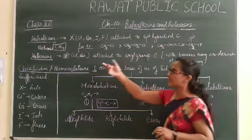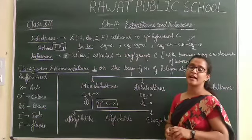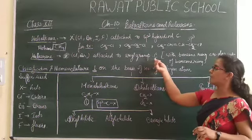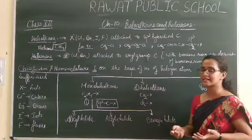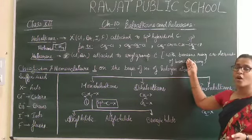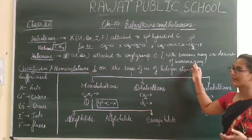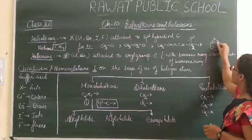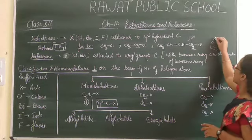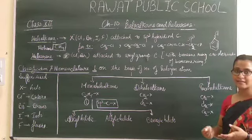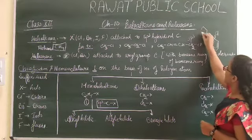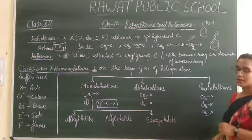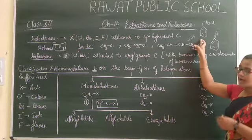Our second type is Haloarenes. Haloarenes are when the halogen groups are attached to the aryl groups of carbon. Aryl groups generally refer to when we are attached to a benzene ring or derivatives of a benzene ring, then we consider it as a Haloarene. For example, benzene with a chlorine group is known as chlorobenzene. Another variety is a structure like CH2Cl attached to a benzene ring, which is also a type of Haloalkane.